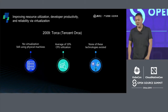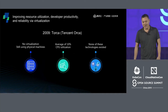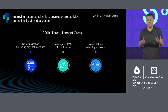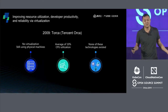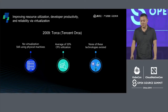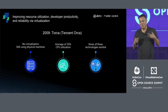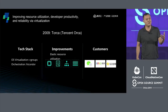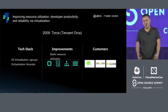A little bit on Torca's history. In 2009 at Tencent, there was no virtualization — everyone was on bare metal using physical machines. We wanted to do virtualization to improve resource utilization, developer productivity, and reliability. CPU utilization was hovering around 10% on average across the entire fleet — really low. None of the new technologies like Kubernetes, Docker, or Swarm existed. We went all in on OS virtualization, skipping hardware virtualization, loving its virtues: it's thin and light and quick to start.